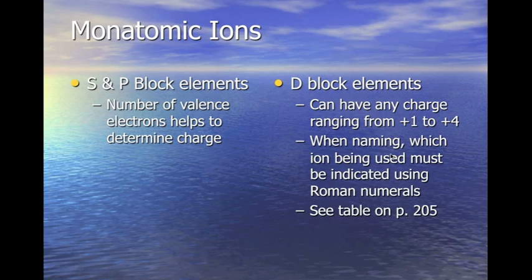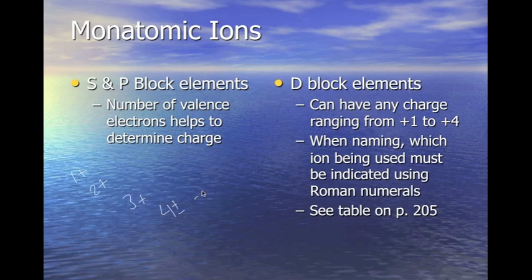For monatomic ions, the number of valence electrons helps determine the charge. Group 1 has an oxidation number of 1+, Group 2 is 2+, Group 13 is 3+, Group 14 is either plus or minus, and then we have minus 3, minus 2, and minus 1 for Groups 15, 16, and 17 respectively. That's for the S and P block, where valence electrons are straightforward.